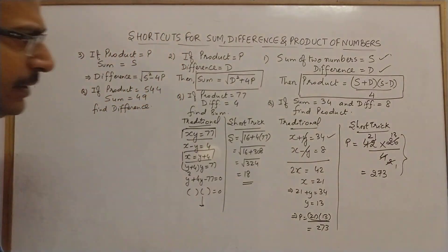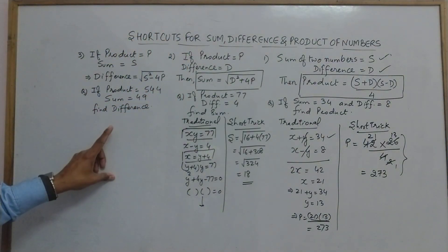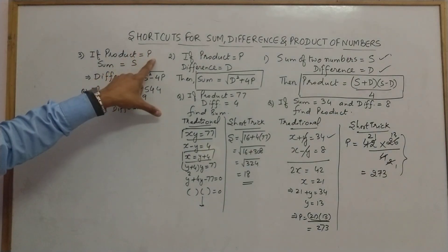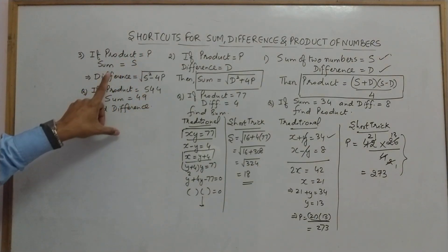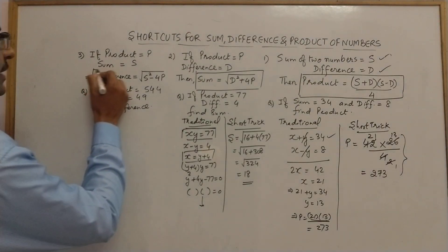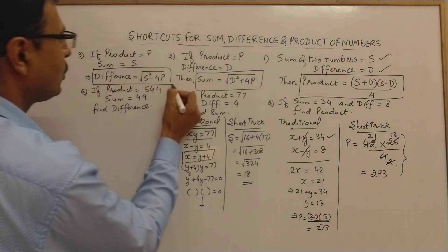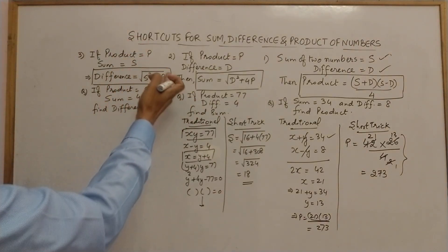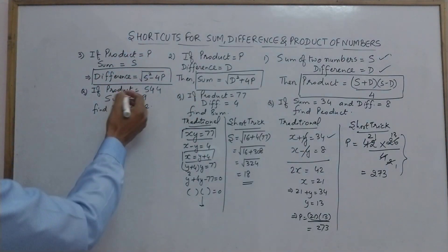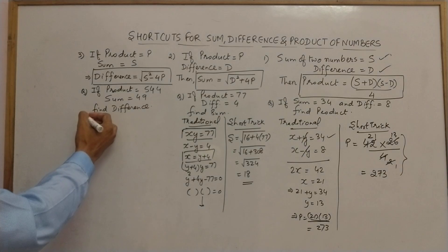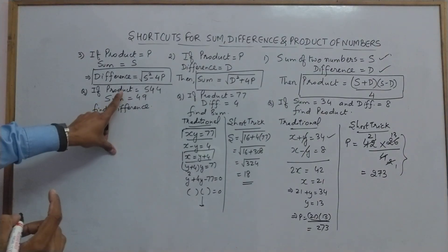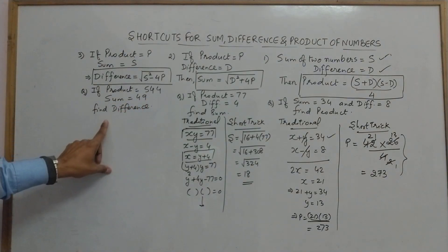Now the third case. The product is given as p and the sum is given, and we need to find the difference. The shortcut for finding the difference is √(sum² - 4×product). Here the product is 544 and sum is 49.